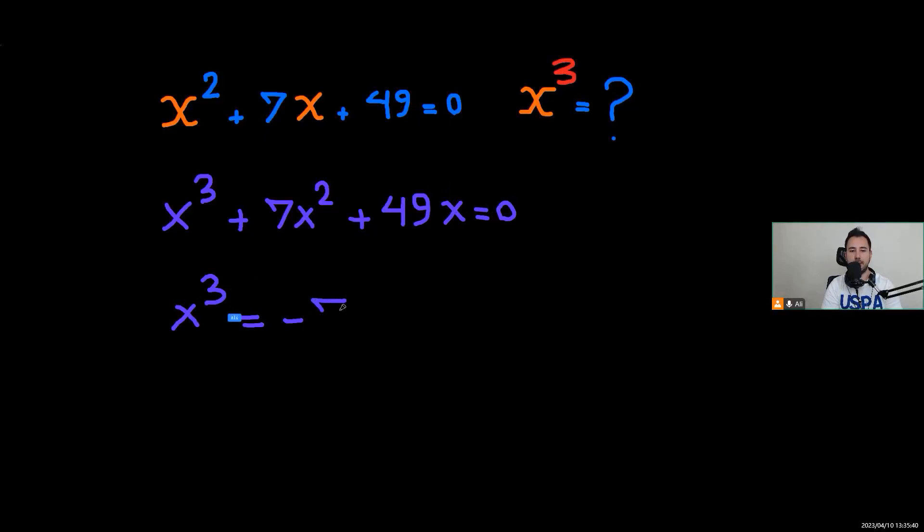So I'm going to have x cubed equals negative 7x squared minus 49x. Now I'm going to factorize the right hand side by negative 7, so I will have x cubed equals negative 7 times x squared plus 7x.